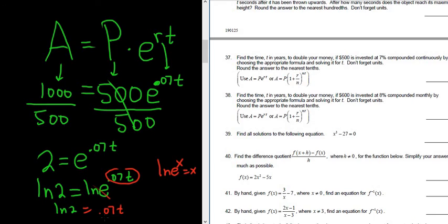And then to finish, you just divide by 0.07. So divide by 0.07, running out of room. So t is equal to the natural log of 2 divided by 0.07. So this is the part where a calculator is very helpful. So it says round to the nearest tenths.